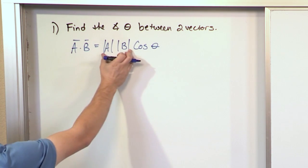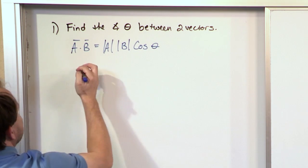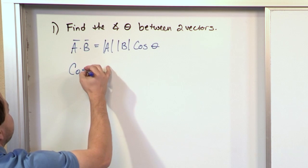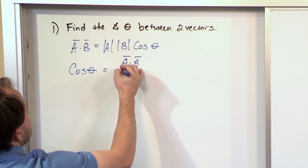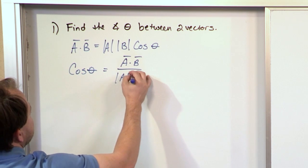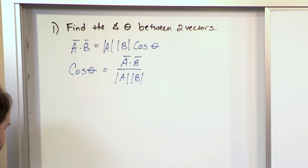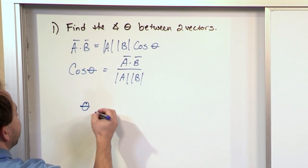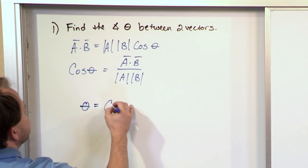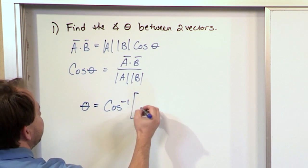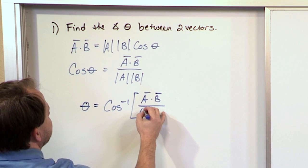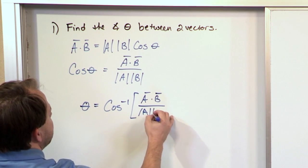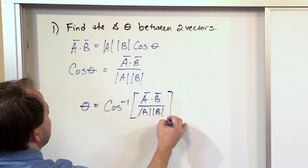If I solve and rearrange, the cosine of angle theta equals A dotted with B divided by the magnitude of A times the magnitude of B. And finally, the angle theta between the two vectors is the inverse cosine of A dot B divided by the magnitude of A times the magnitude of B on the bottom.